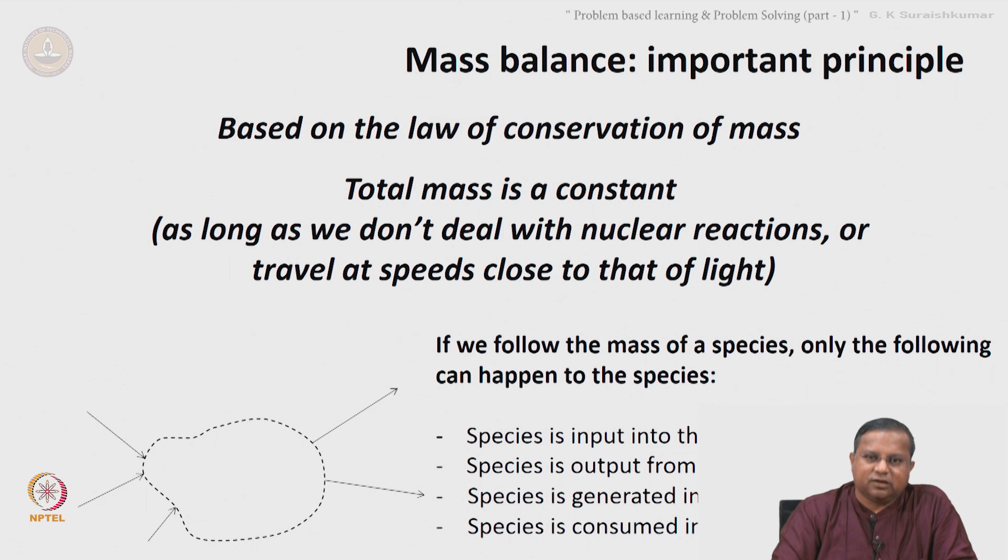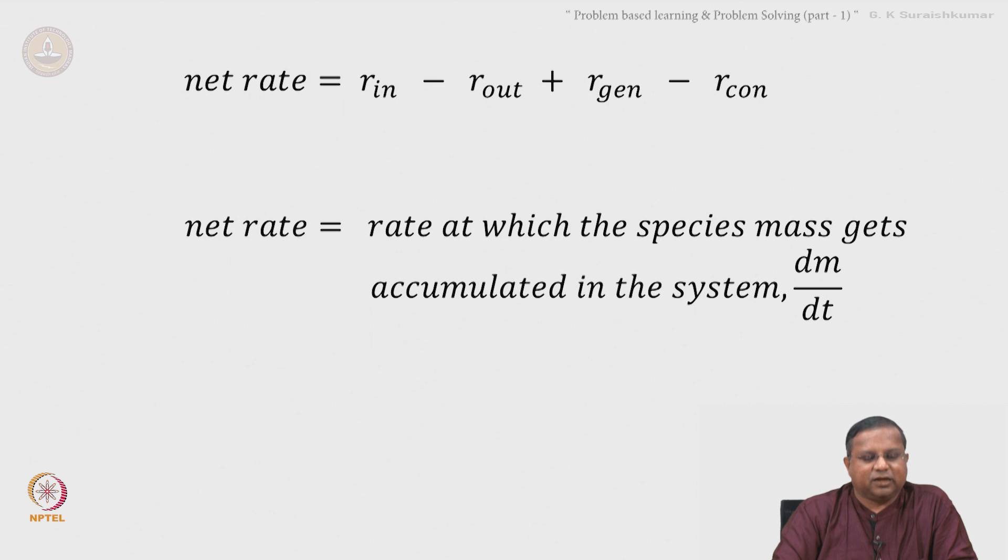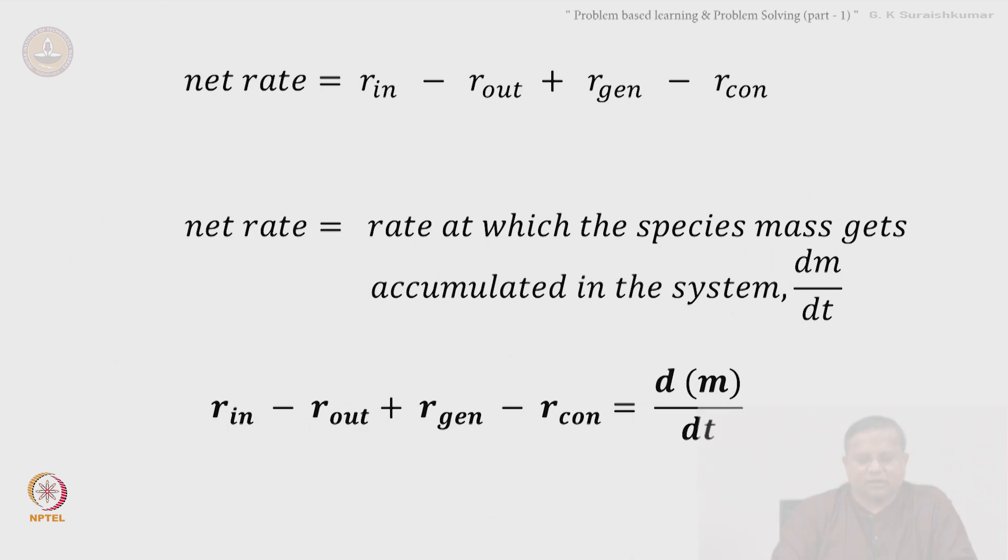The logical relationship between those rates is the net rate is input rate minus output rate plus generation rate minus consumption rate. And the net rate is the rate at which mass of that species gets accumulated in the system, which can be represented as a derivative of time, d/dt of m. Therefore, r_in minus r_out plus r_gen minus r_consumption is dm/dt.